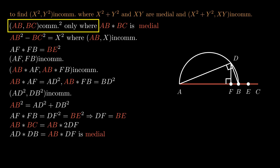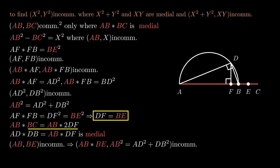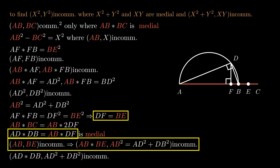ab and bc are incommensurable, but bc is commensurable with be because it is its double, so ab is also incommensurable with be. And ab times be is incommensurable with ab squared, which equals ad squared plus db squared by the Pythagorean theorem. df equals be, and ab times df is equal to ad times db, so ad times db is incommensurable with ad squared plus db squared.